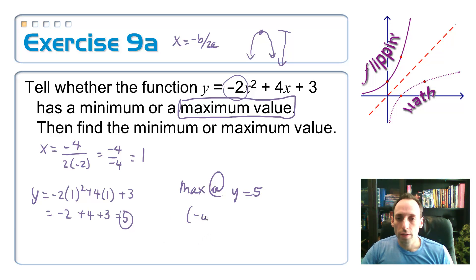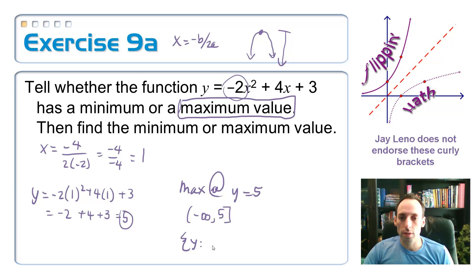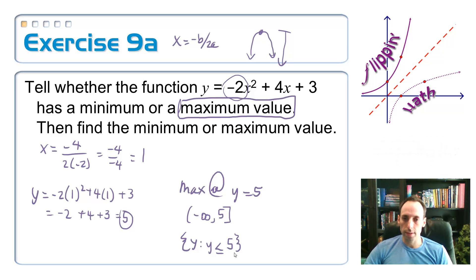So I can write this in interval notation like this: I'm going to go negative infinity all the way up to positive 5, and it includes that, so it gets a bracket. If you prefer the Jay Leno method with the curly brackets, y such that y ≤ 5. Look at that, very nice.